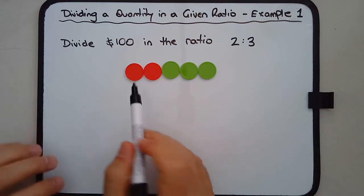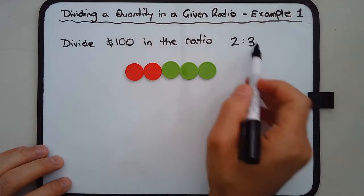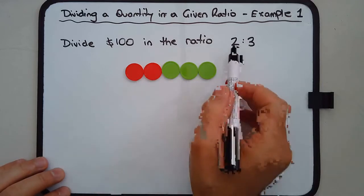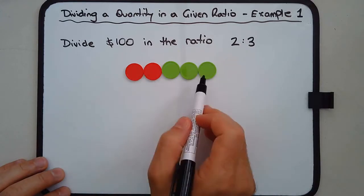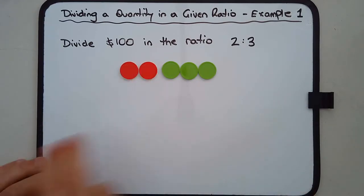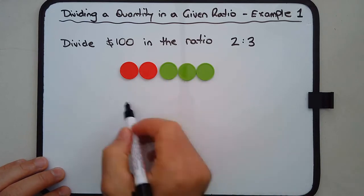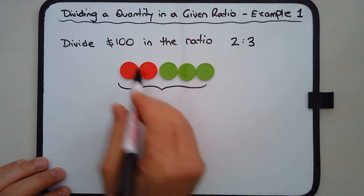So how do we do this? We can use five counters. So we know that there are five parts, and I'm going to use these counters to represent these five parts. The two is represented by the two red counters, the three is represented by the three green counters. All up, these five parts all add up to $100.